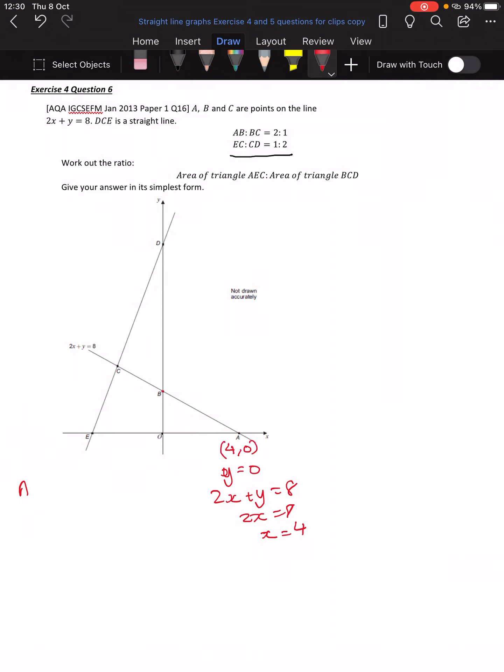And likewise, we can work out B, because at B, X is equal to 0. So at point B, I'm just going to do that there, X is equal to 0. Therefore, 2X plus Y is equal to 8. So Y is equal to 8. Nice. Yeah, so I'll just put in 0, 8 there for B.